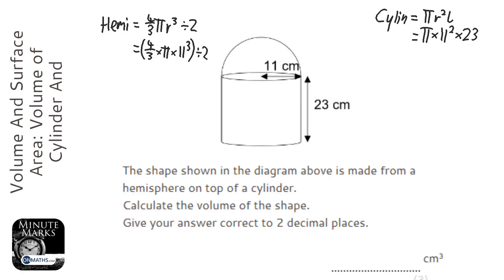So I'm going to get the answers in terms of pi. So I'm going to do the hemisphere first. 4 thirds times pi times 11 cubed equals and then divide by 2. And it gives me a horrendous answer, so 2662 over 3 pi.